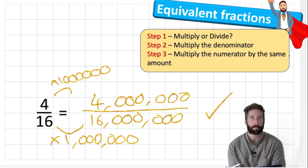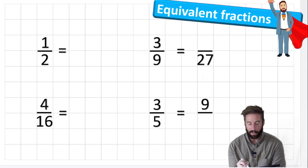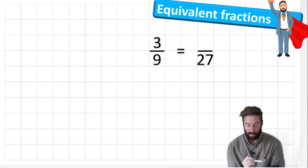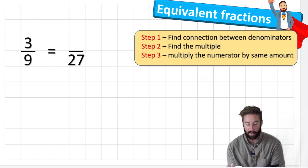Let's look at another type because sometimes you might see an equivalent fraction where they already give you the denominator. We're going to have slightly different steps this time: first find the connection between the denominators, then find the multiple or divisor, then multiply the numerator by that same amount.